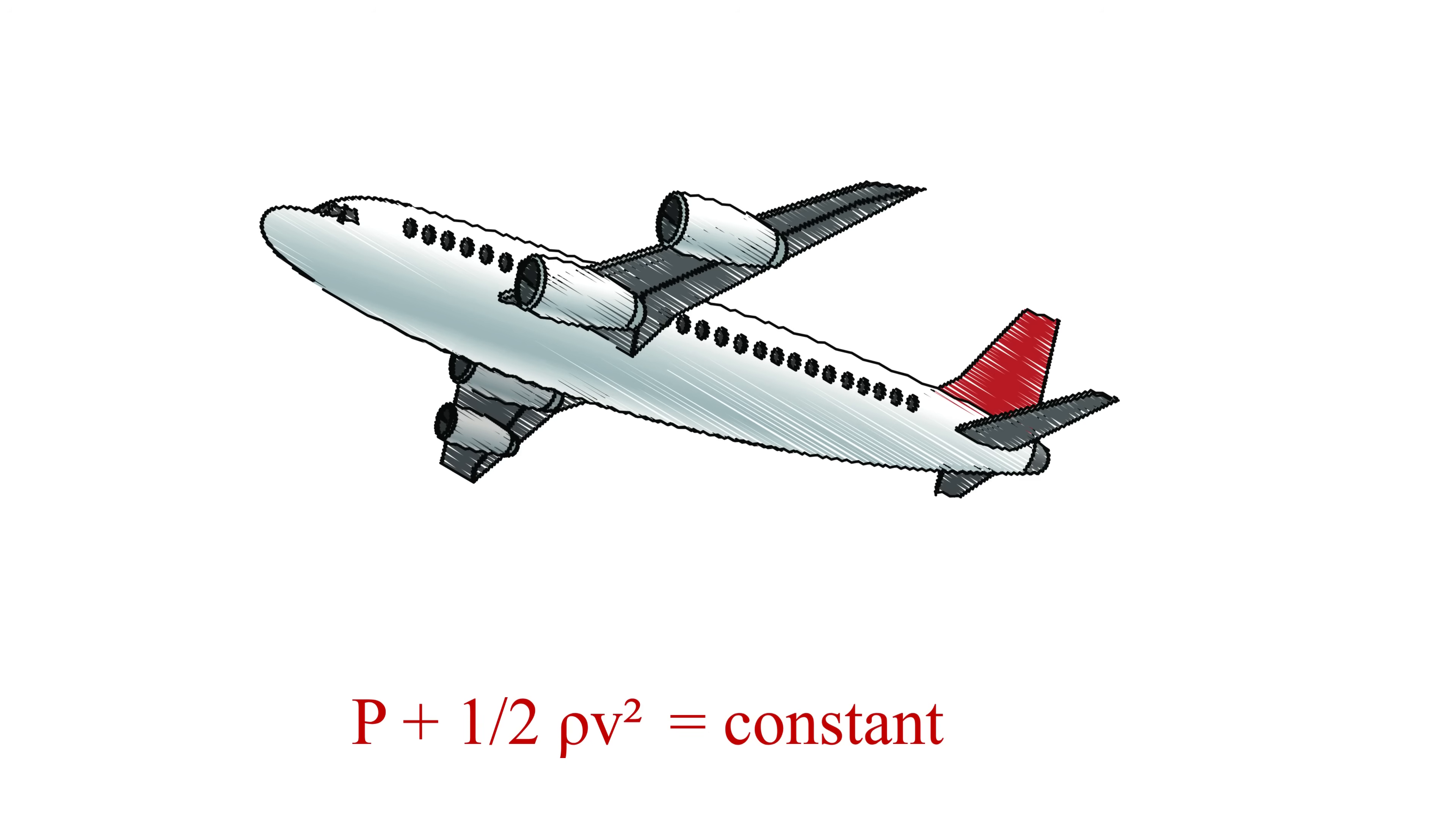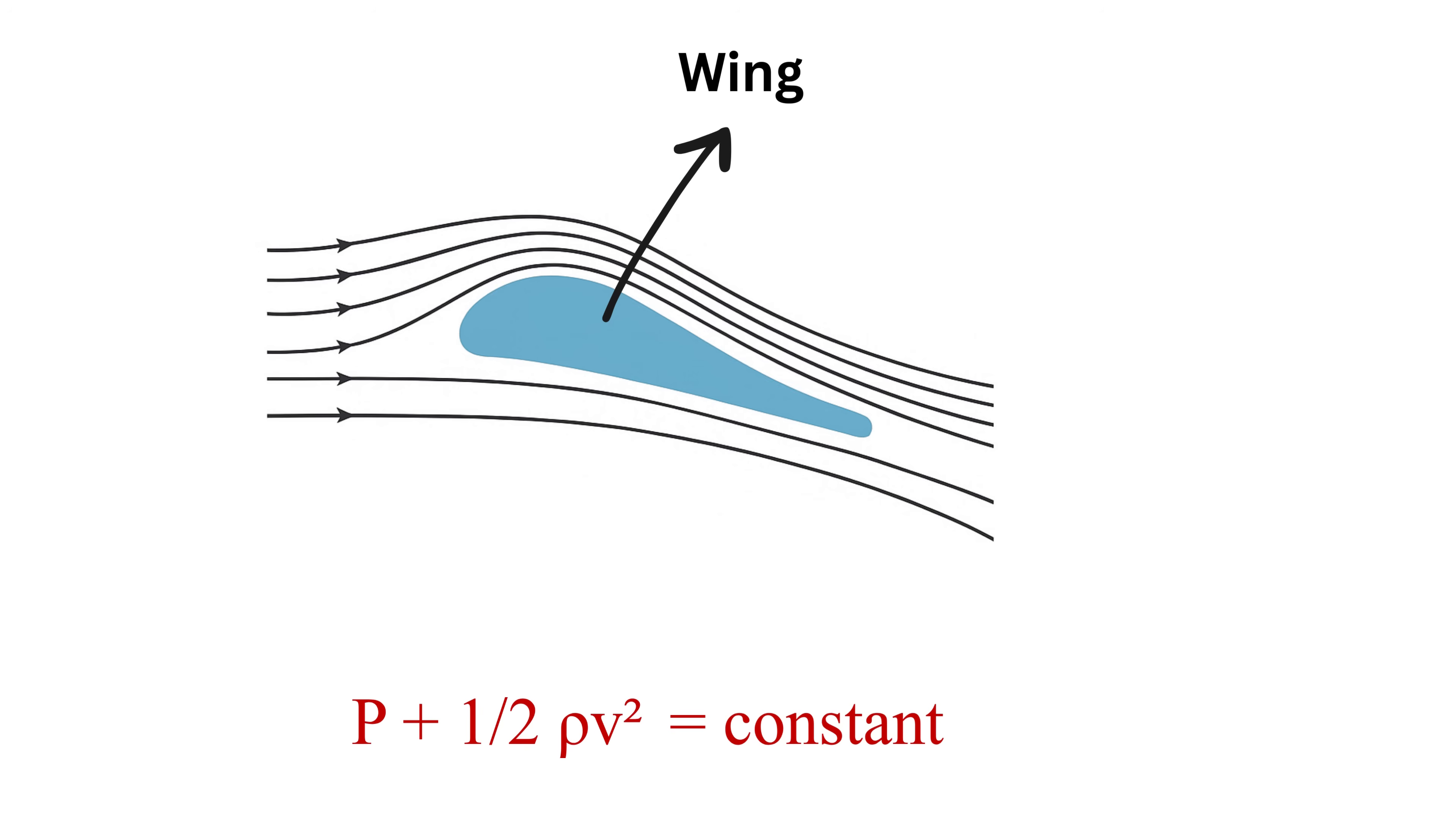This idea helps explain why airplanes fly. The shape of a wing is designed so that air flows faster over the top surface than under the bottom. And because the air on top is moving faster, its static pressure is lower. That means the pressure under the wing is higher than the pressure above.